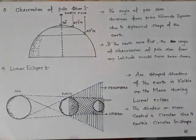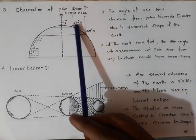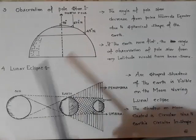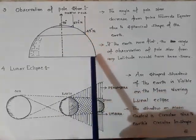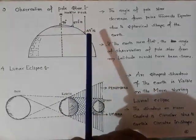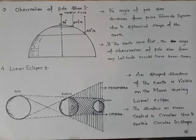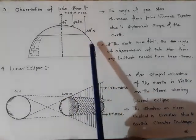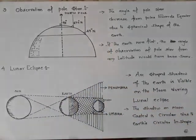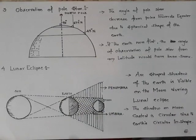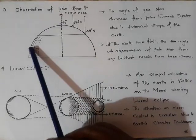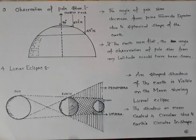And when you move further towards the equator, its angle changes to 45 degrees. So likewise, as you move towards the equator, the angle becomes increasingly different. So this also proves that the shape of the earth is spherical.